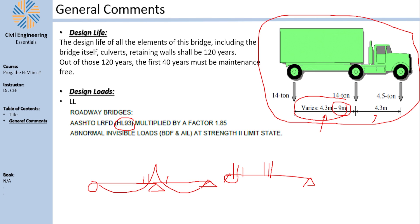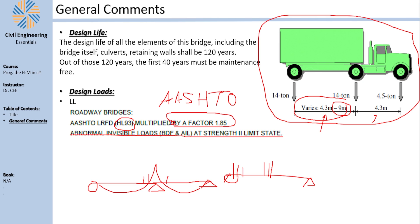The truck load we are using is going to be multiplied by a factor of 1.85. This is a local requirement — a factor of safety, because AASHTO provides the minimum design criteria and it is upon your discretion, or local authorities may require you to increase it. I'm stating in my documentation that I'm using the HL93 truck multiplied by a factor of 1.85. There are also abnormal indivisible loads which I'll come to at the Strength 2 limit state.